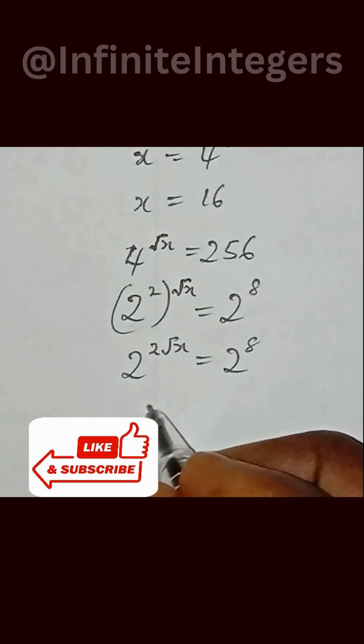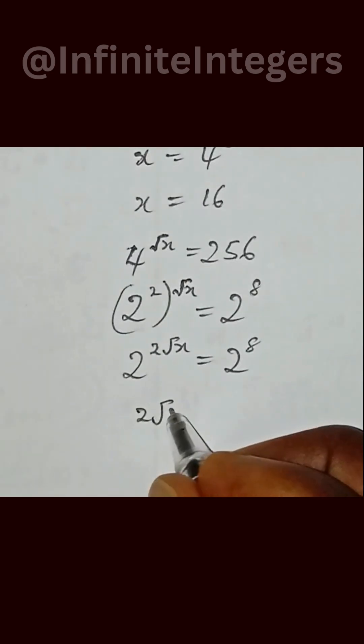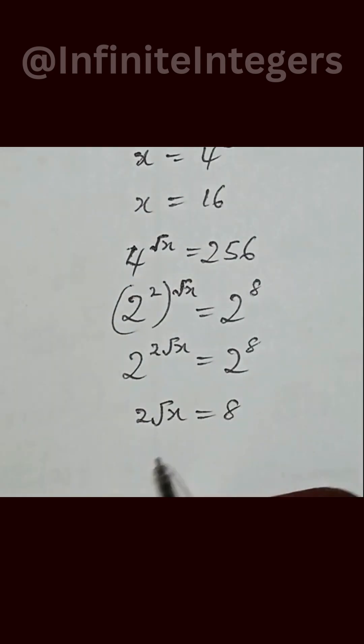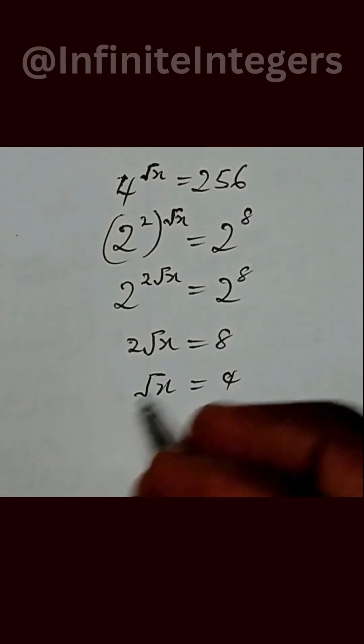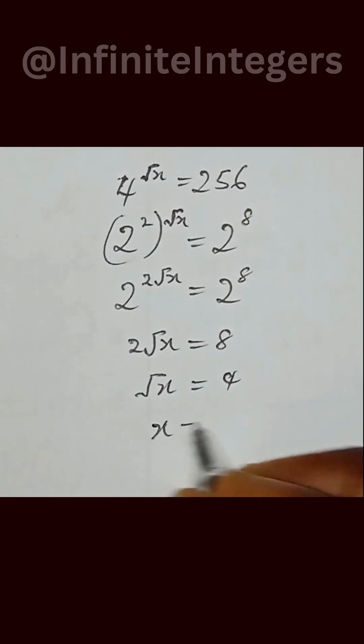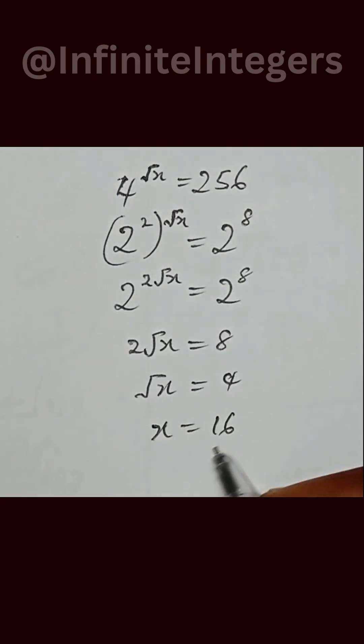So equating the exponent, we have 2 square root x equal to 8. Divide both sides by 2, we have square root x equal to 4. Then square both sides, we have x equal to 16.